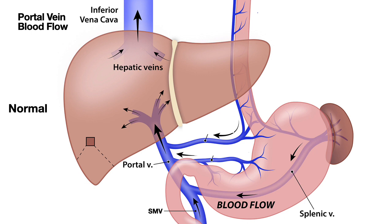Two systems of veins are very important in esophageal varices: the right and left gastric veins, which drain into the portal vein. Let us take a deeper look into the liver lobule to understand the flow of blood from the portal vein to the hepatic vein.